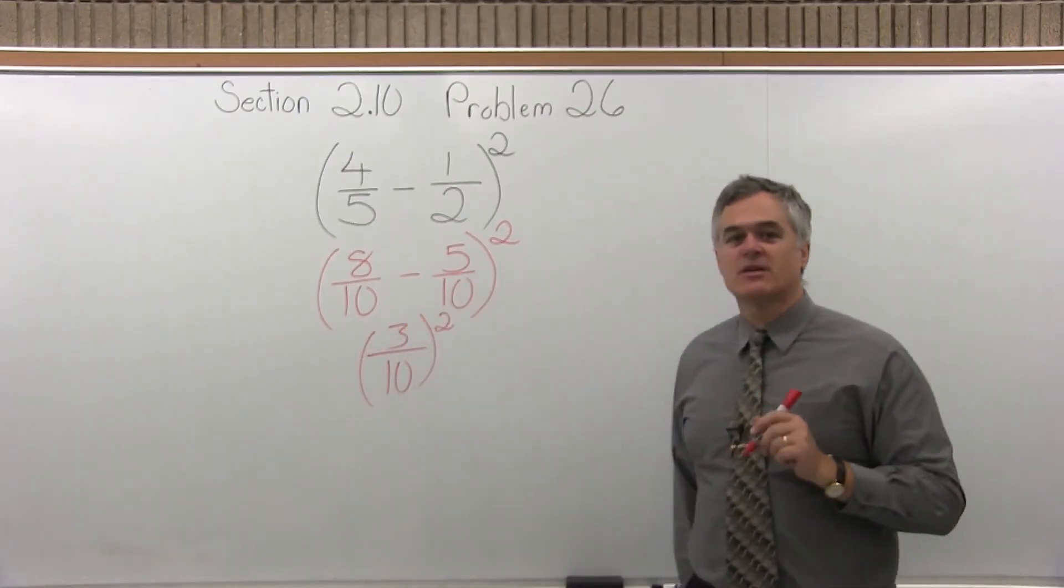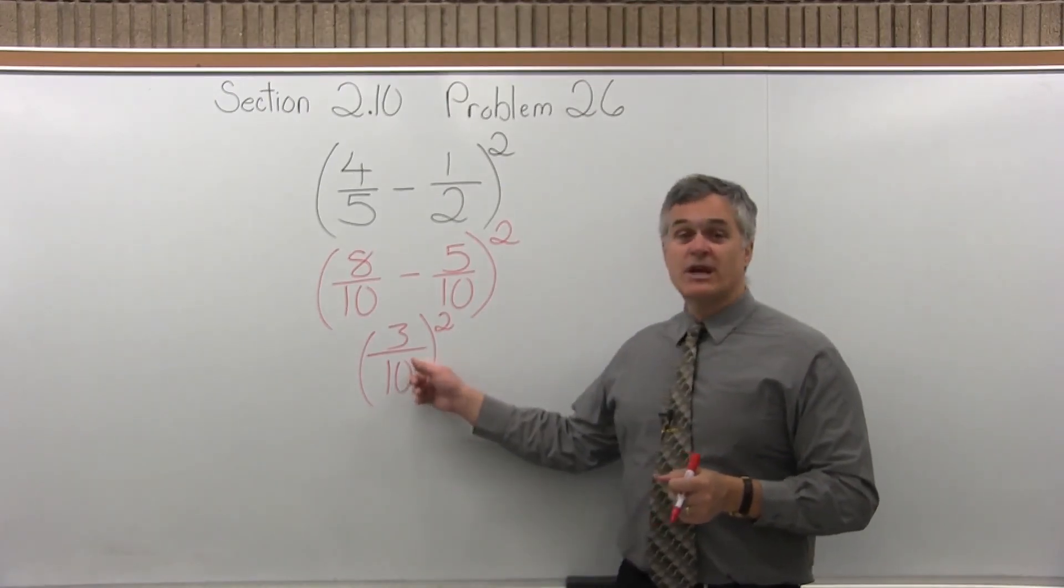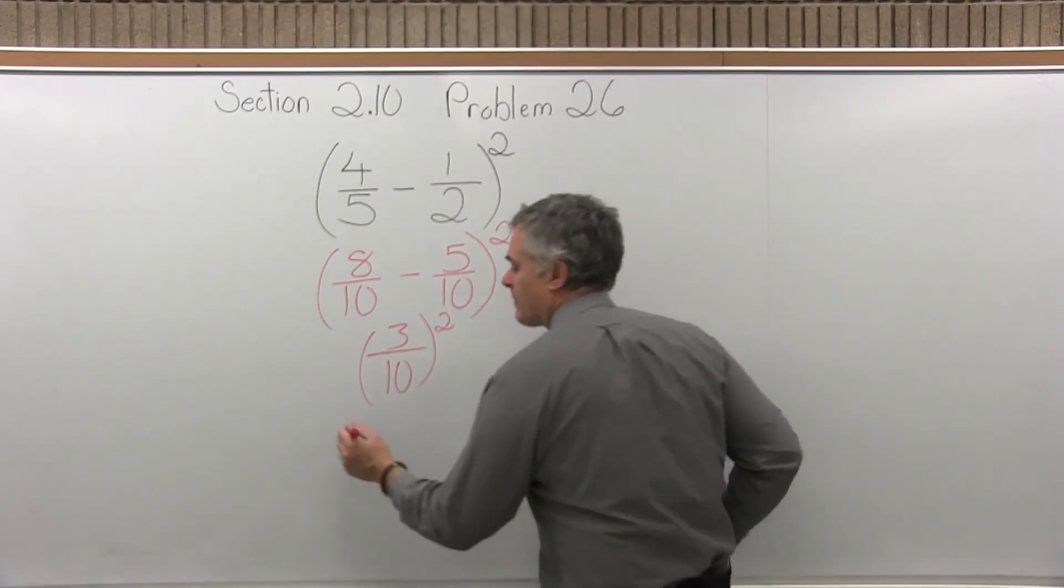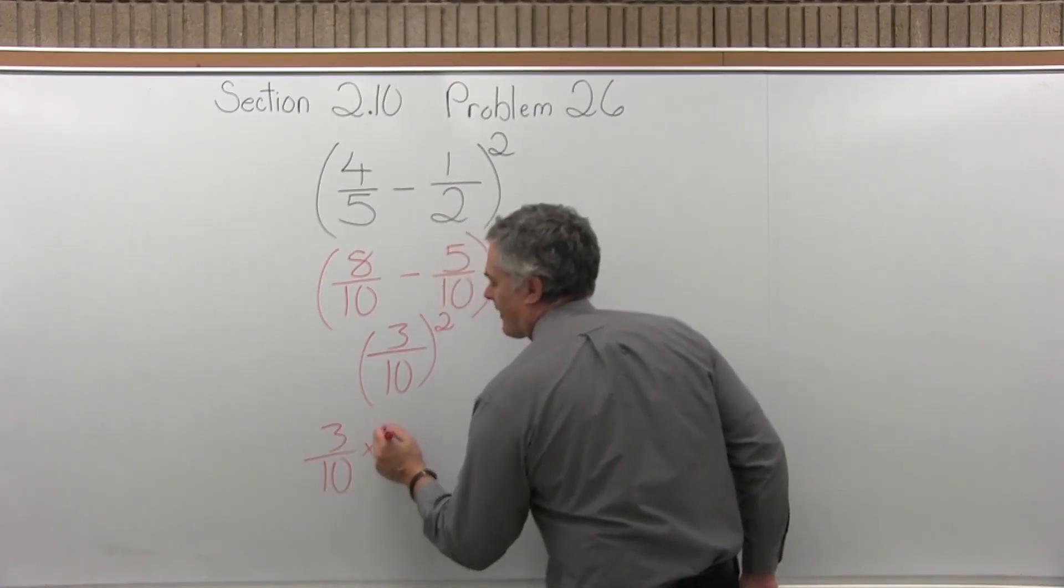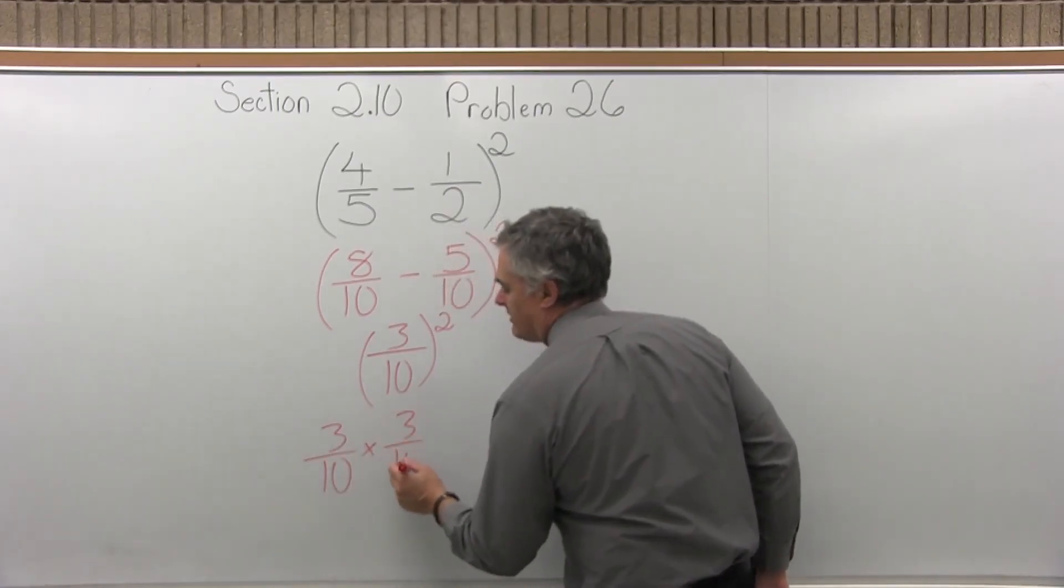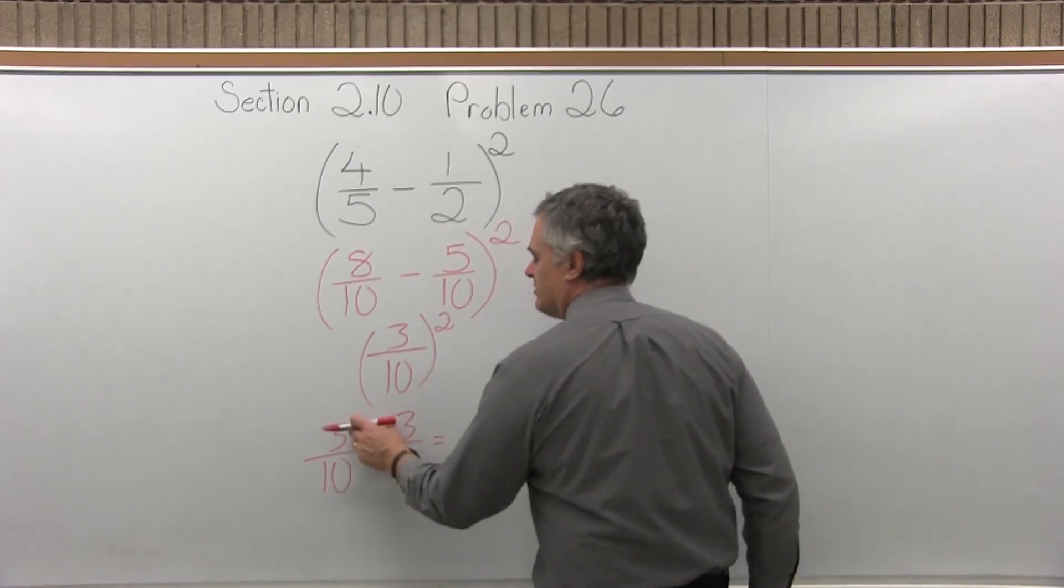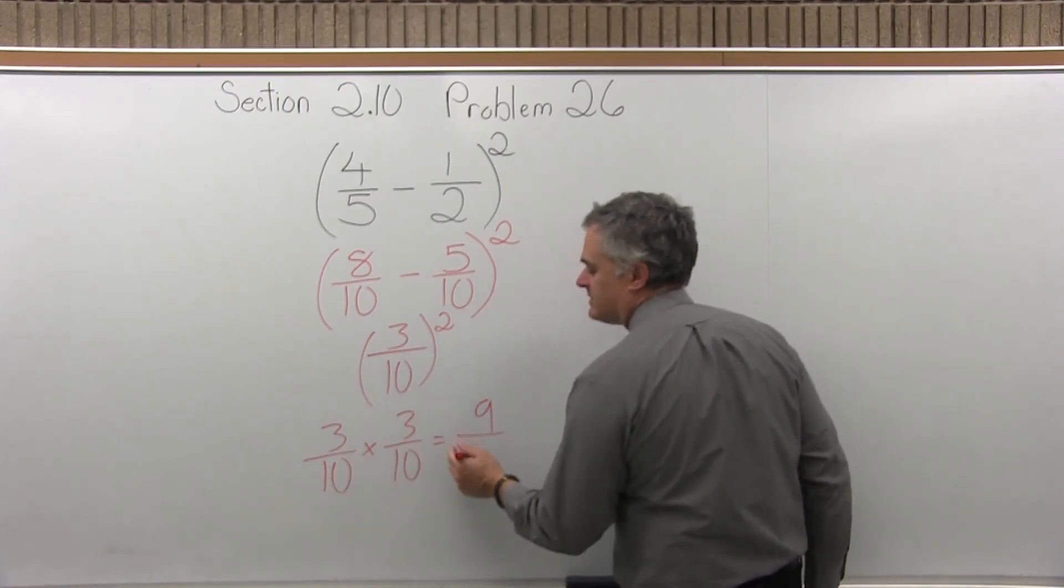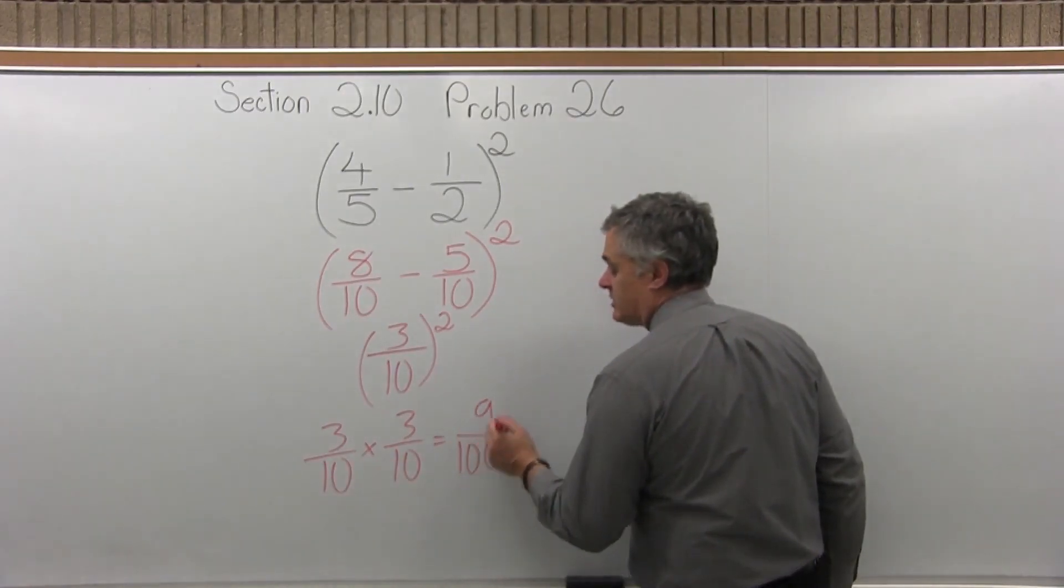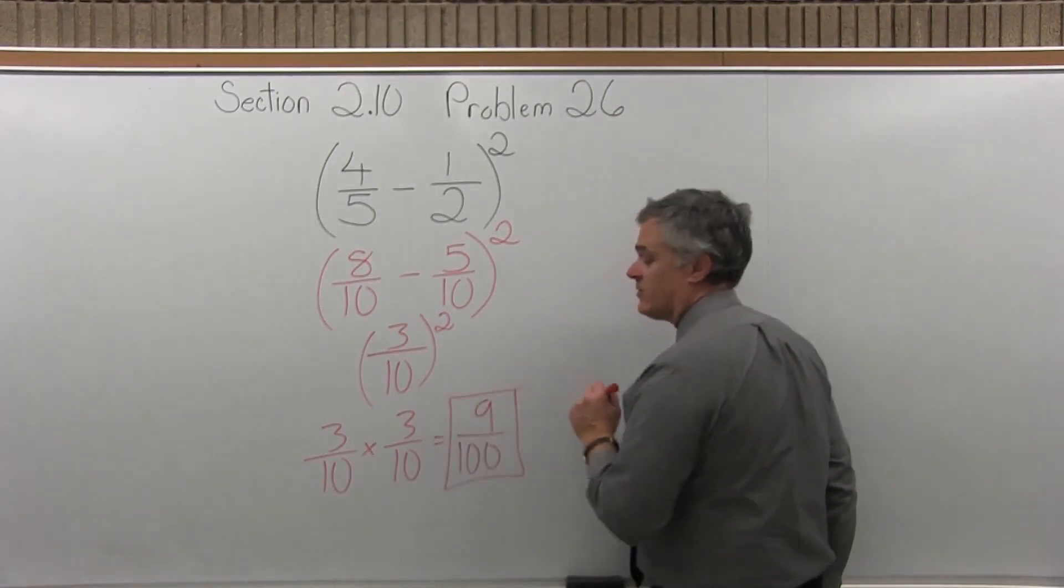3 tenths to the second power. So what that means is 3 over 10 times 3 over 10. And now when I multiply, you multiply numerator times numerator. 3 times 3 is 9. And denominator times denominator. 10 times 10 is 100. So the final answer is 9 over 100.